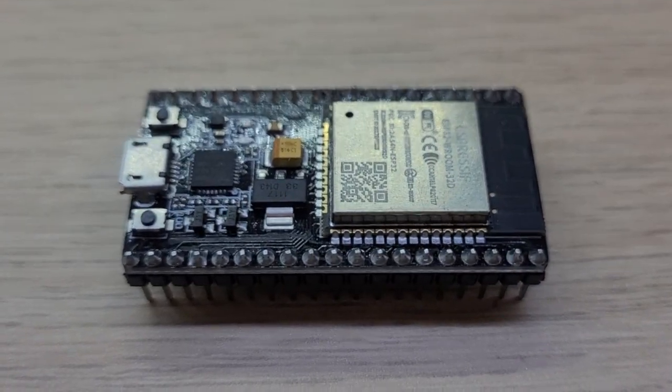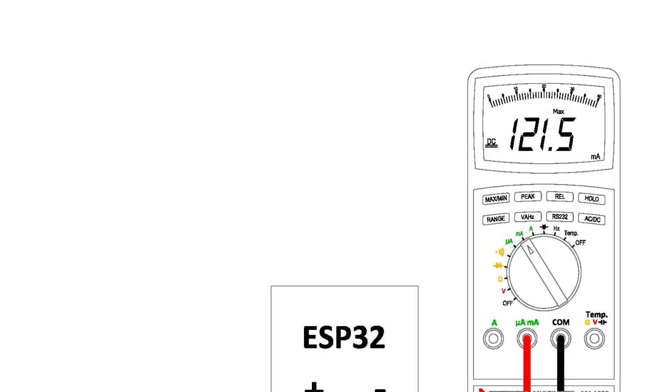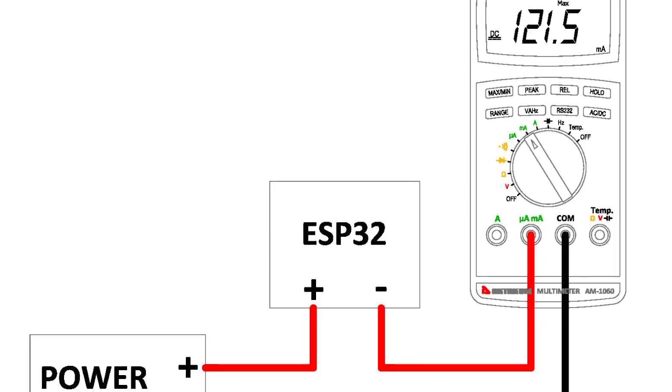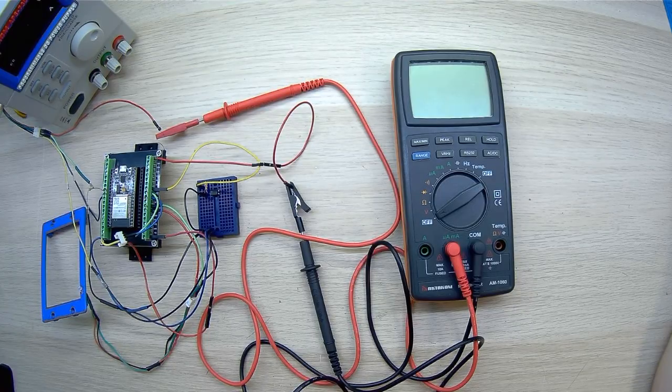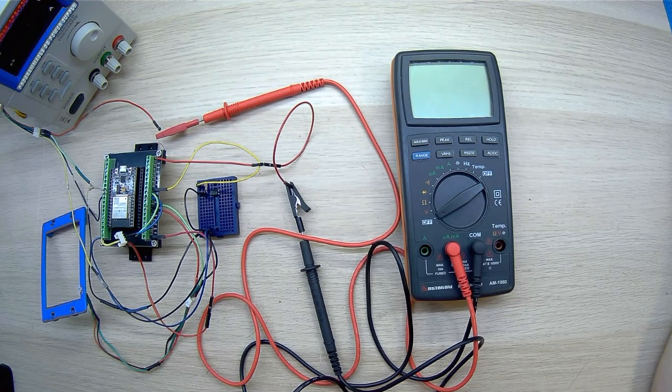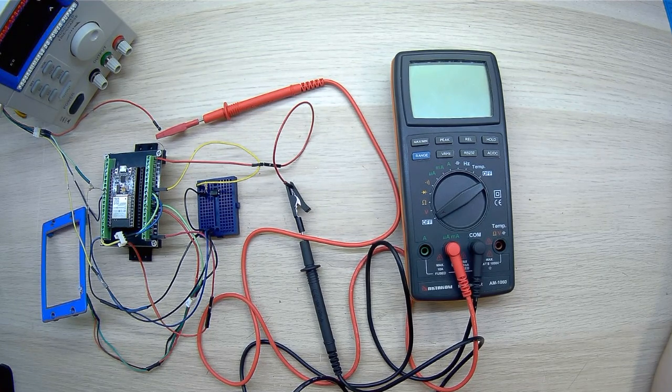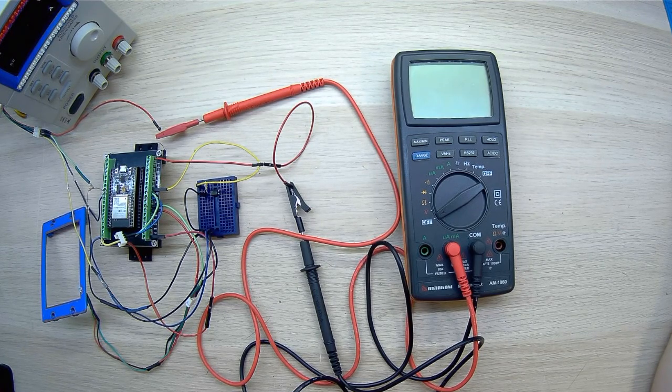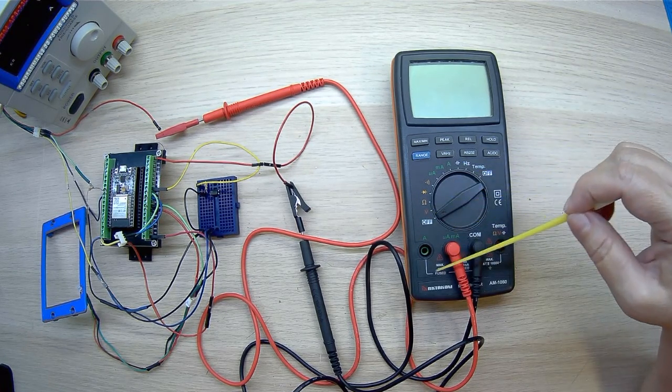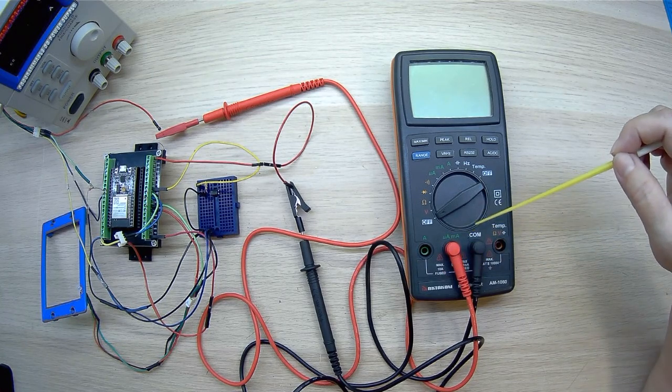The second example of using the graphic scale of the AM1060 multimeter is measuring the current consumption of a microprocessor in Wi-Fi mode. In this example we use an ESP32 module with built-in Wi-Fi and Bluetooth interfaces. It is important to remember that any multimeter that measures current is connected through special current sockets and a common socket.